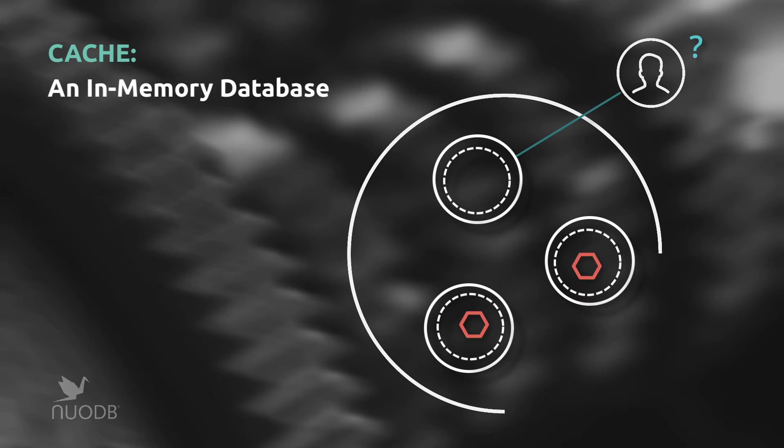If a peer needs data that's not in its own cache, it requests it from the nearest peer who has it. This ability to populate data on demand means that NuoDB improves performance by naturally optimizing data locality based on usage patterns.